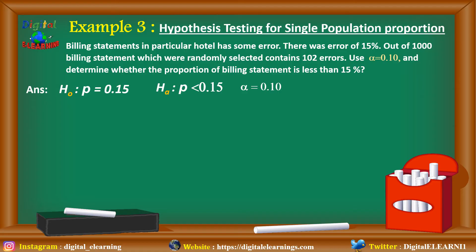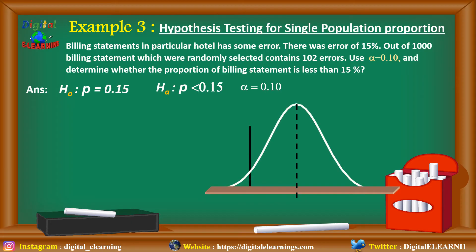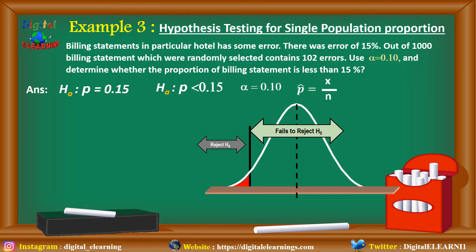We use alpha as 0.1. We need to calculate the p-hat value. First, we plot the graph and define the rejection region — since it is a left-tailed test with p less than 0.15, rejection is on the left side. We calculate p-hat as x divided by n, that is 102 errors out of 1000 billing statements, giving p-hat as 0.102.